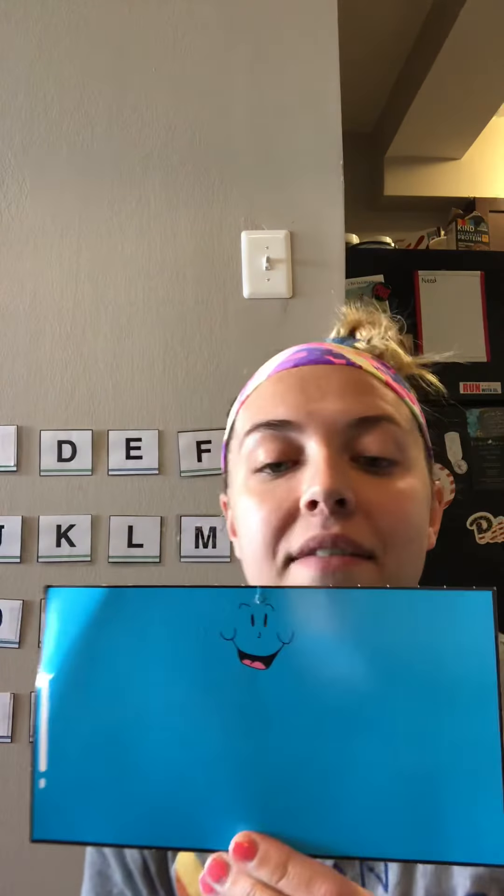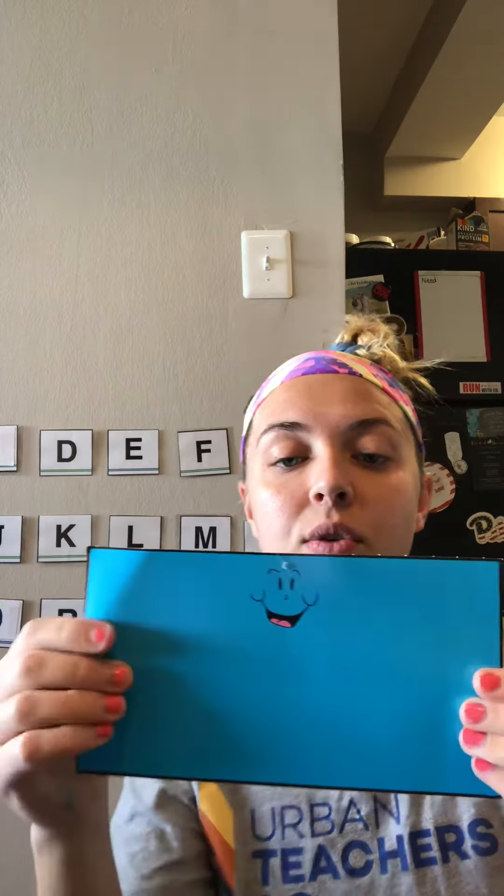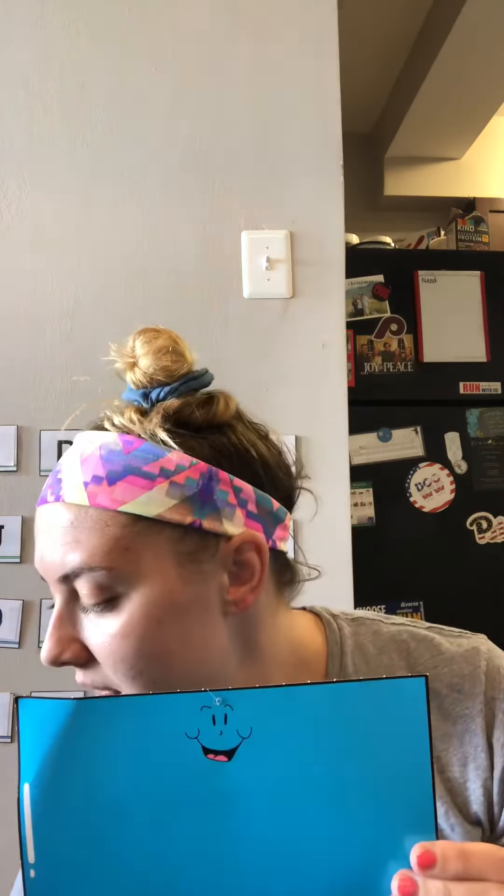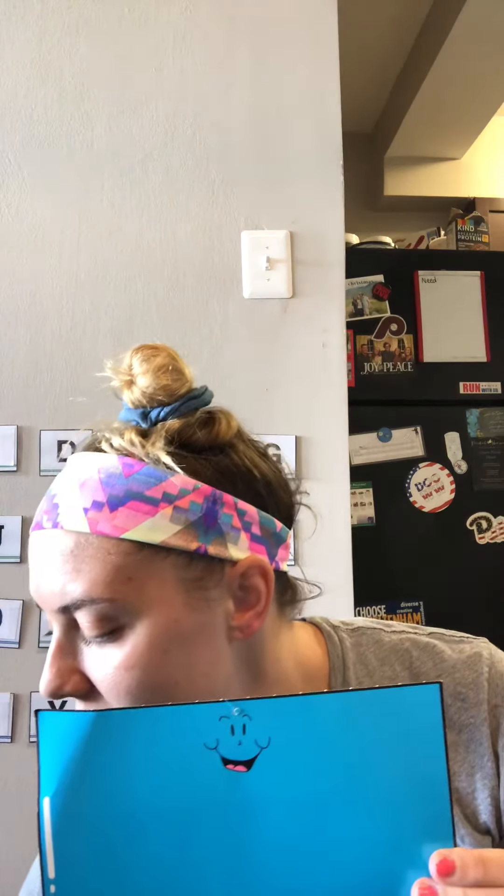Next, we have this blue shape. It has two long sides and two short sides. What shape is this? This is a rectangle.